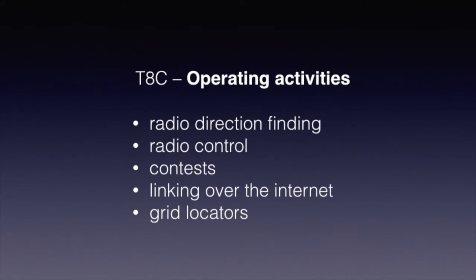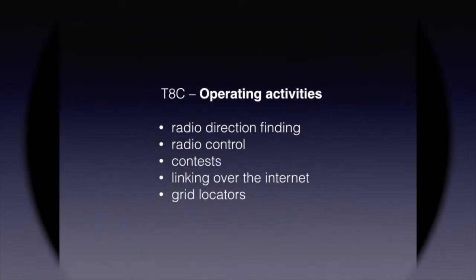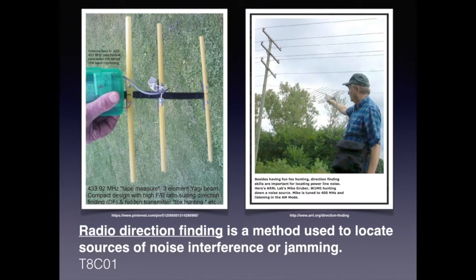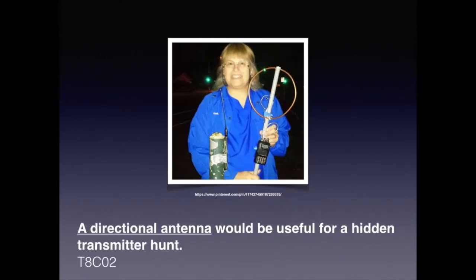In this section we're covering operating activities including radio direction finding, radio control contests, linking over the internet, and grid locators. One of the nice aspects of radio direction finding, or fox hunting — hidden transmitter hunting — is that you can make a lot of the equipment yourself. This photograph illustrates a homemade highly directional antenna, or Yagi, using a tape measure. For the exam, you need to know that radio direction finding is a method used to locate sources of noise interference or jamming, and that a directional antenna would be useful for a hidden transmitter hunt.